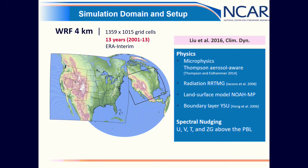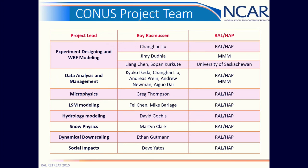We ran 13 years over the continental US using this domain, forced with ERA-Interim on the boundaries every six hours. Microphysics, radiation, land surface, and boundary layer schemes were used with spectral nudging. For details, refer to the paper by Cheng-Hai Liu. It takes a team — about 10 to 15 scientists at NCAR working on this — and this simulation took about three years to complete.